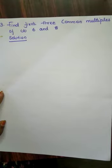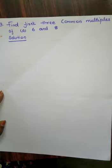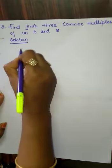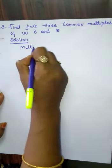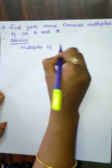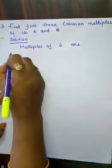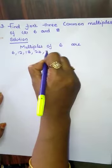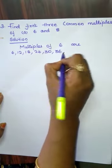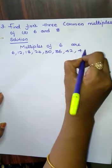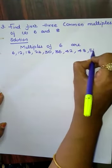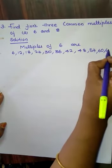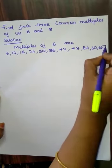Find the first 3 common multiples of 6 and 8. First, write the multiples of 6: 6, 12, 18, 24, 30, 36, 42, 48, 54, 60, 66, 72, and so on. Next, write the multiples of 8: 8, 16, 24, 32, 40, 48, 56, 64, 72, 80, and so on.